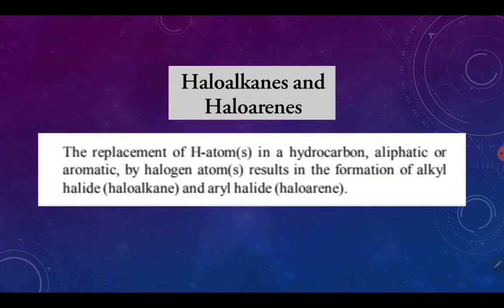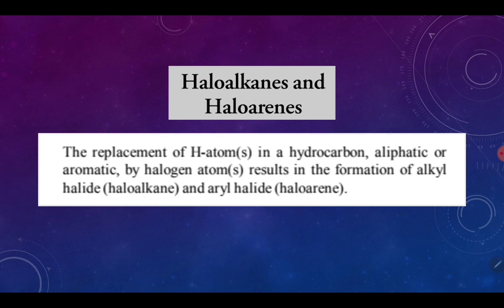Hello everyone, welcome to this lecture on haloalkanes and haloarenes. This is a very important chapter of organic chemistry, and in today's lecture we are going to look at some exciting and interesting chemical reactions. So without wasting any time, let's begin. Haloalkanes and haloarenes are formed by replacement of hydrogen atoms in hydrocarbons — alkanes, alkenes, alkynes, and even aromatic hydrocarbons like benzene — with a halogen atom. We call these alkyl and aryl halides.